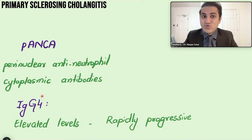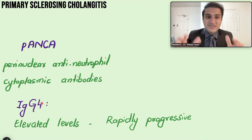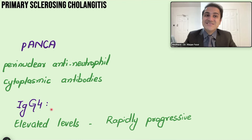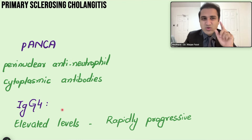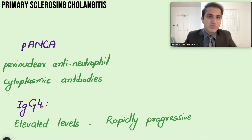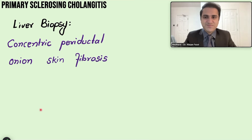IgG4 antibodies should also be tested in patients with suspected PSC. If positive, it indicates IgG4-positive sclerosing cholangitis, which is rapidly progressive but importantly responds to corticosteroids. Therefore, if IgG4 is positive, corticosteroids should be given.